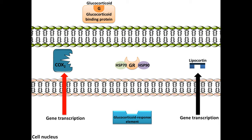Glucocorticoid is carried via the transporter glucocorticoid binding protein. It then binds to the glucocorticoid receptor complex, which is coupled to two heat shock proteins called Hsp90 and Hsp70, located within the cell's cytoplasm.